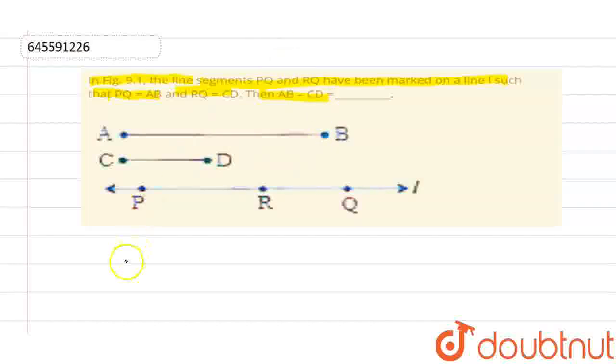Before we begin, let's review what is given. First, PQ is equal to AB. And the second thing given is RQ, which is equal to CD.